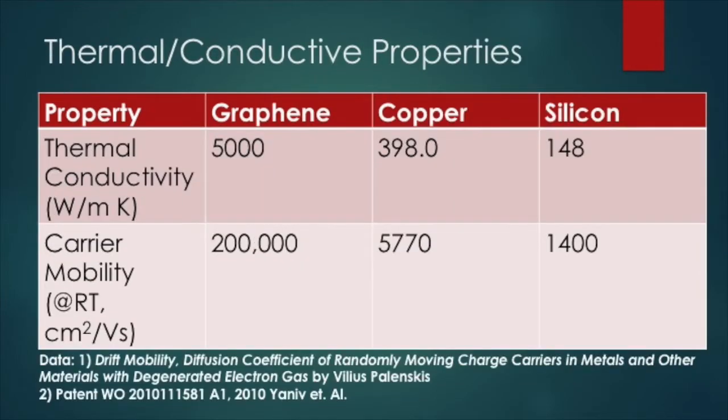Secondly, graphene has the highest thermal conductivity of any material ever recorded. Due to the strength of the carbon-carbon bonds in graphene's hexagonal lattice, there is very little scattering of photons, or energy excitations, making graphene an excellent conductor of heat.